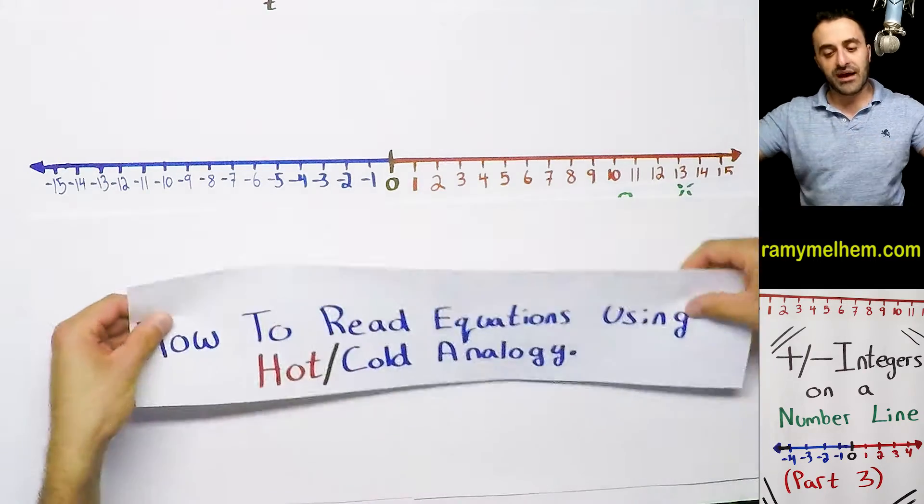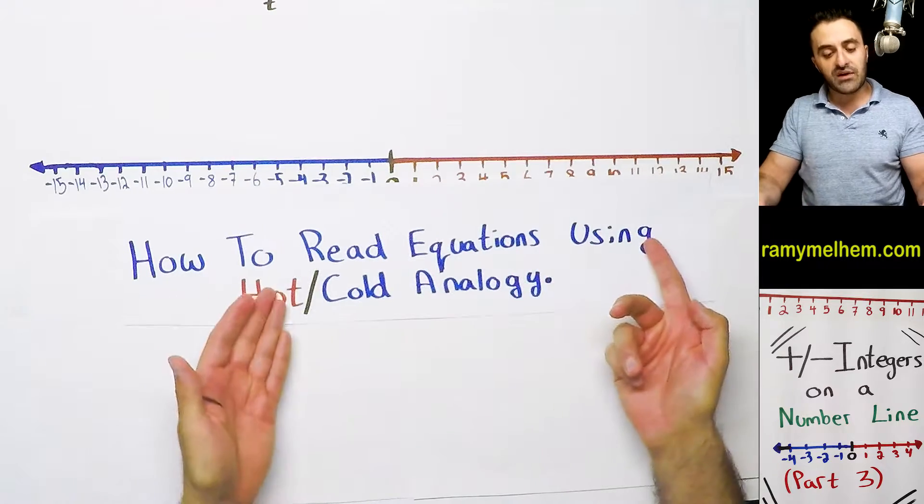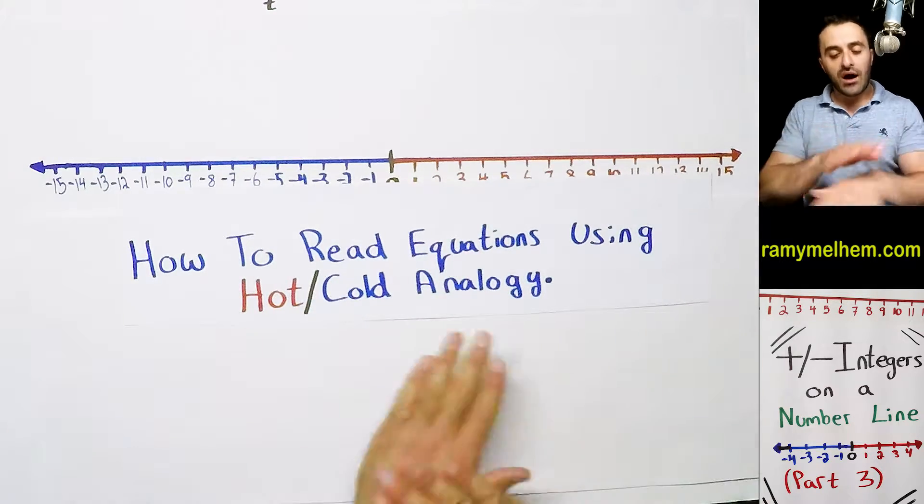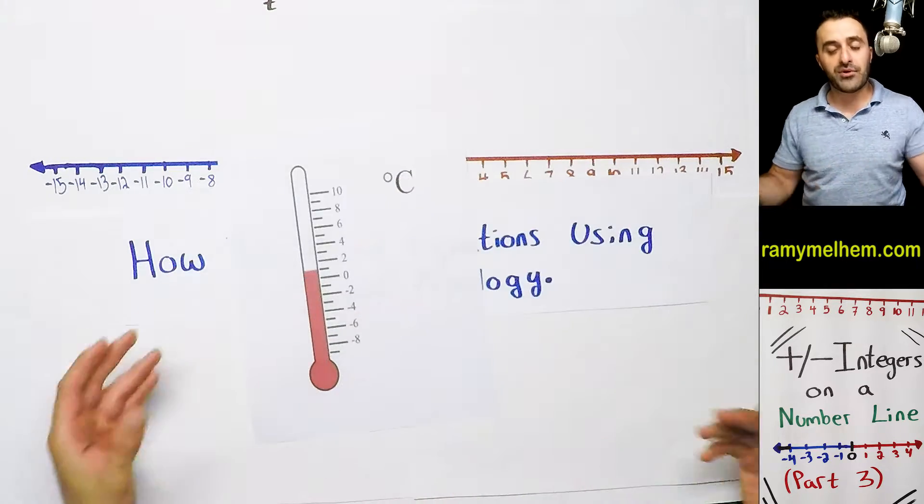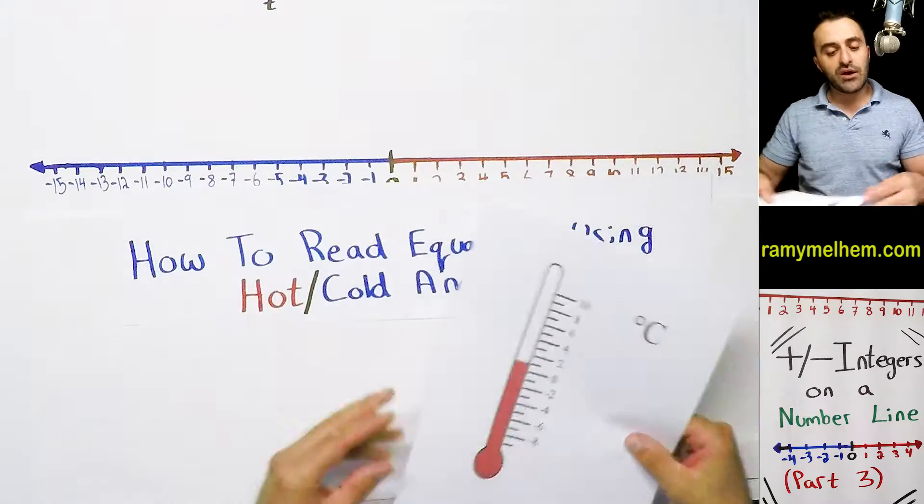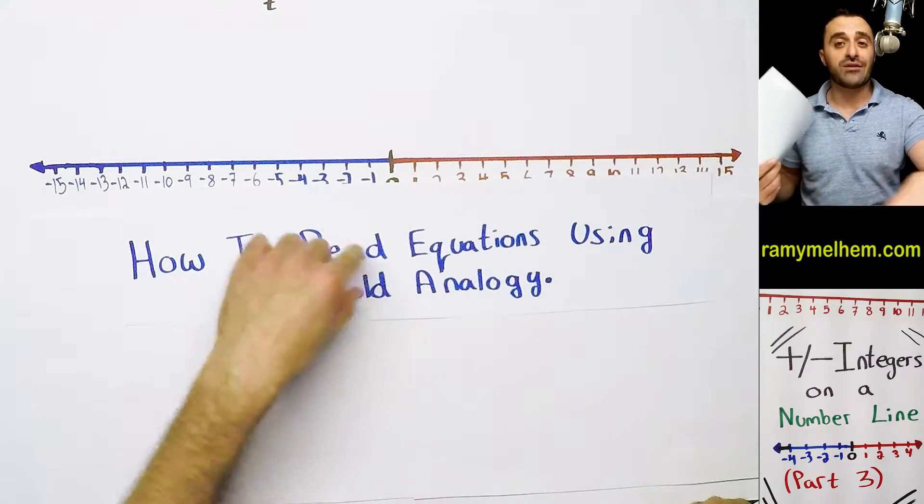The first thing you've got to understand how to do is how to read equations using the hot and cold analogy. I'm going to be talking nothing but hot and cold analogies and I'm going to relate them to thermometers. So this thermometer is like a number line, sort of like this one. We're going to be reading equations first in order to translate them in this hot and cold analogy.